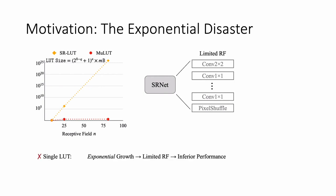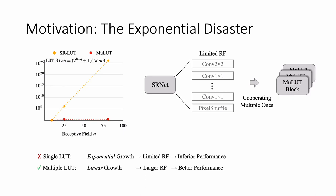In this work, we propose to increase the indexing capacity by cooperating multiple LUTs. The total size of MuLUT is linear to its receptive field, yielding a practical method to obtain superior performance.